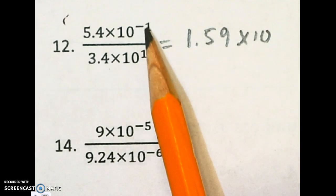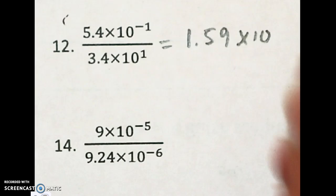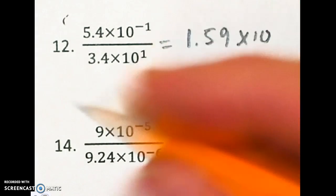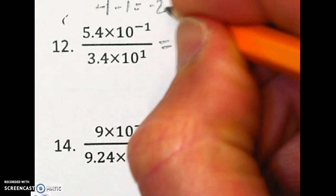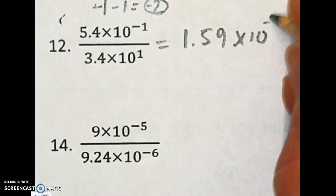Our power is going to be negative 1 minus 1. So doing the math right up here at the top. Negative 1 minus 1. That gives me negative 2. So my power is negative 2.